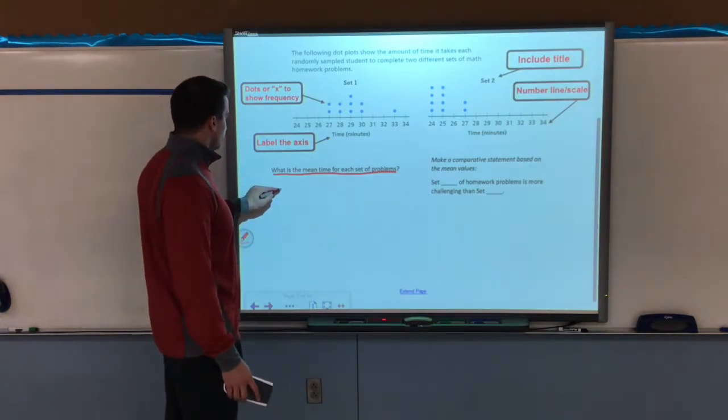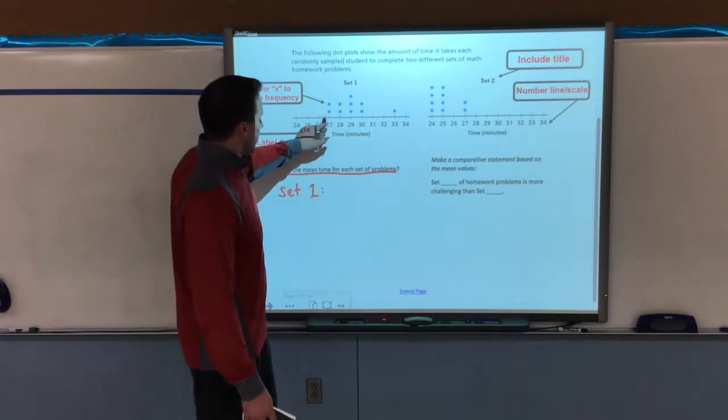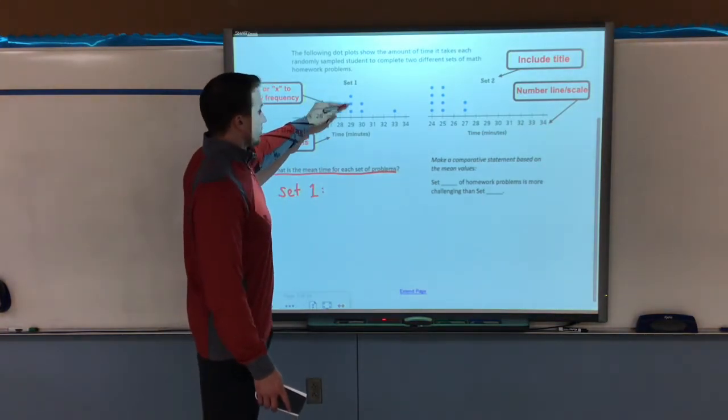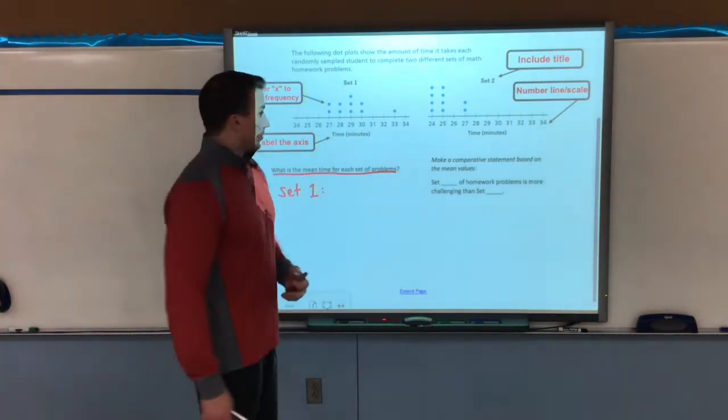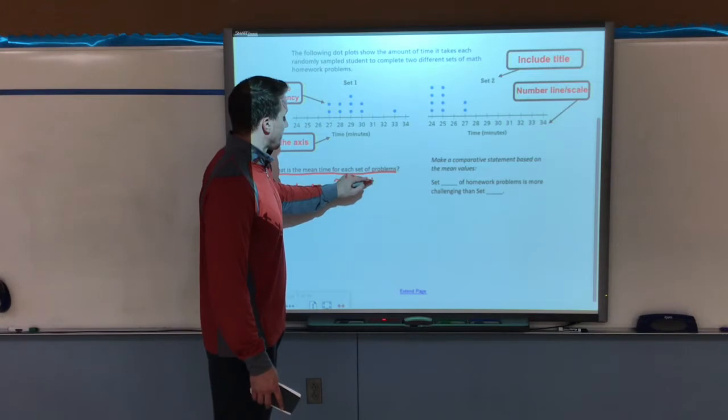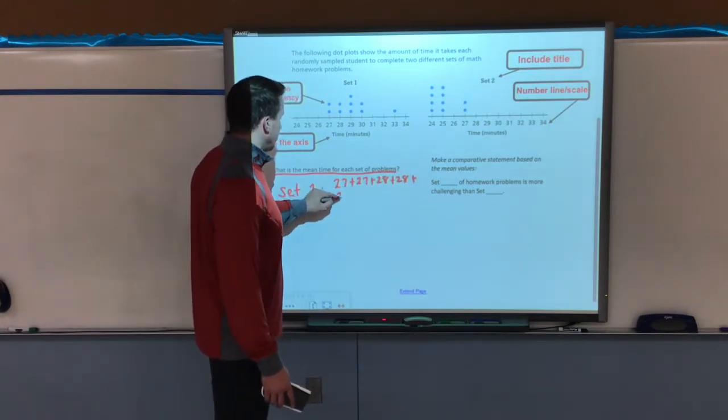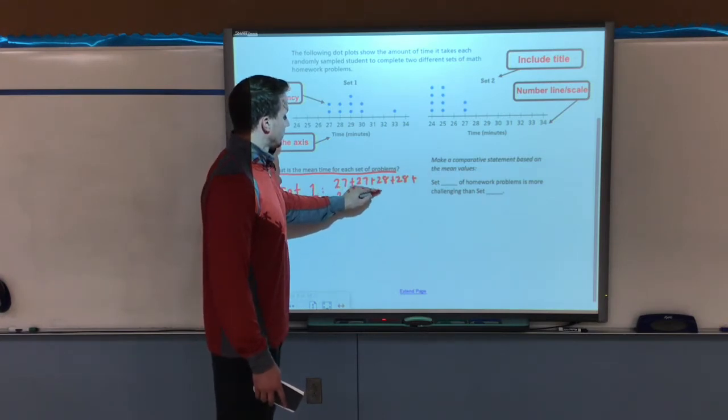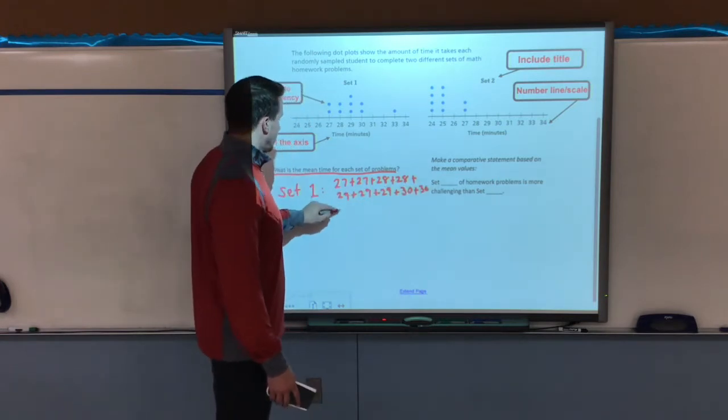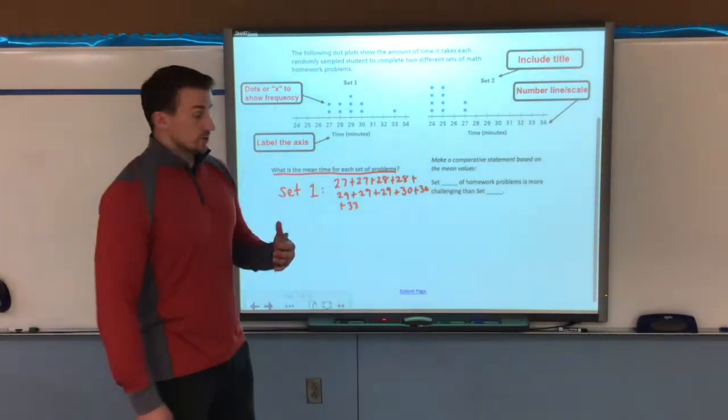So for set one, I have all of these dots. So that means I need to include all of them. So I'm going to write down 27 twice, 28 twice, 29 three times, 30 twice, and then 33. So for set one, I have two 27s, two 28s, I have three 29s, two 30s, and a 33. So those are all the values in that data set.